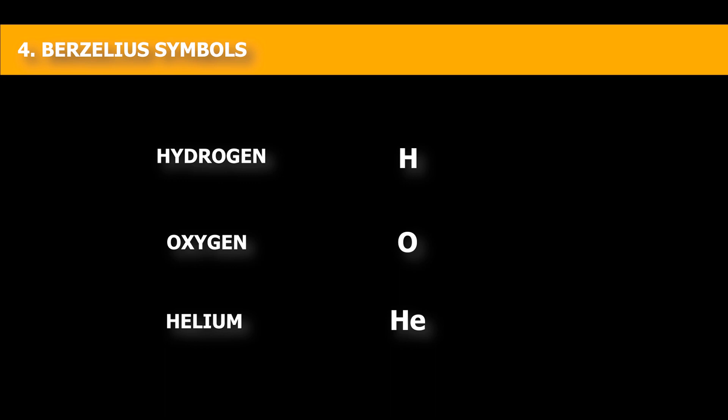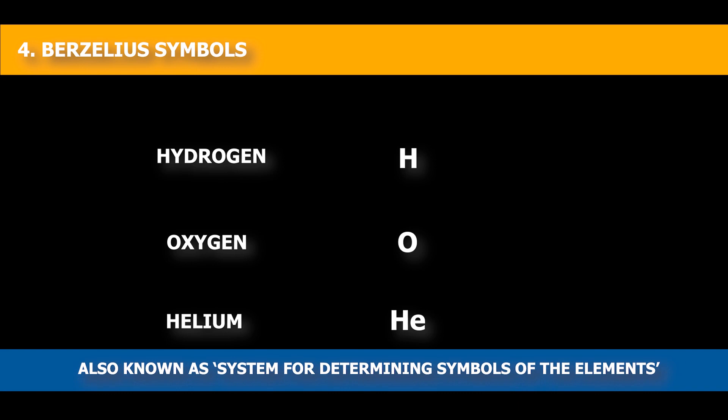In today's time, we use modified version of Berzelius system. The modified version of Berzelius system is also known as system for determining symbols of the elements.